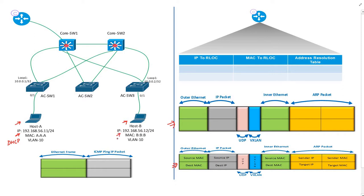For this video, let's assume host A gets IP address 192.168.56.11/24 and host B gets IP address 192.168.56.12/24. Switch 1 has complete information about host A — its MAC address is A:A:A and IP address is 192.168.56.11. Switch 1 knows this because it keeps an eye on DHCP packets passing through it using the DHCP snooping feature.